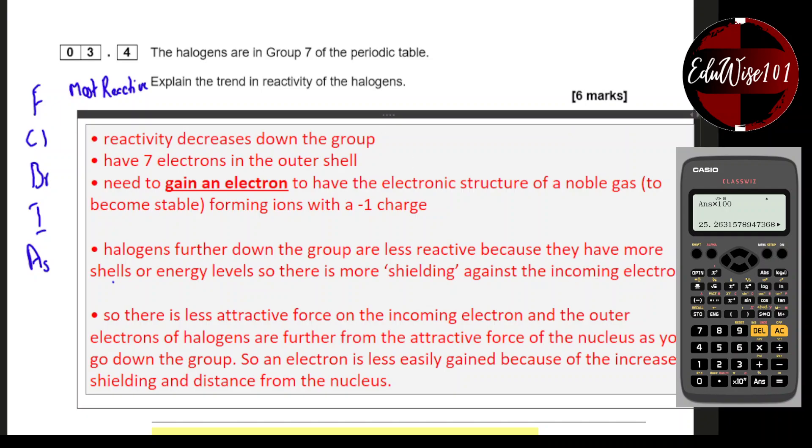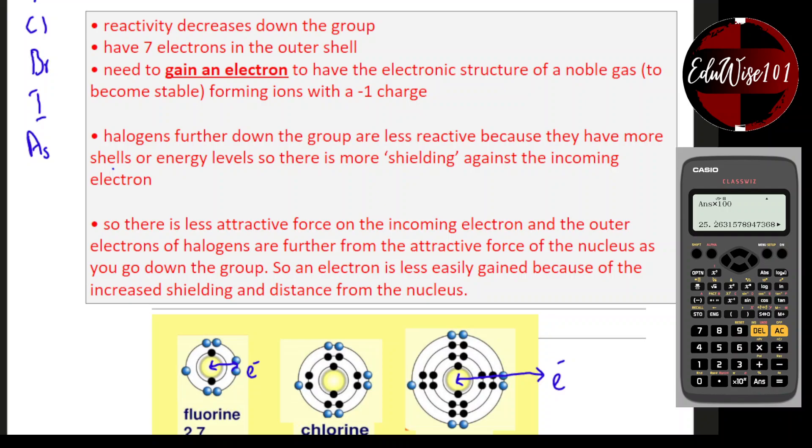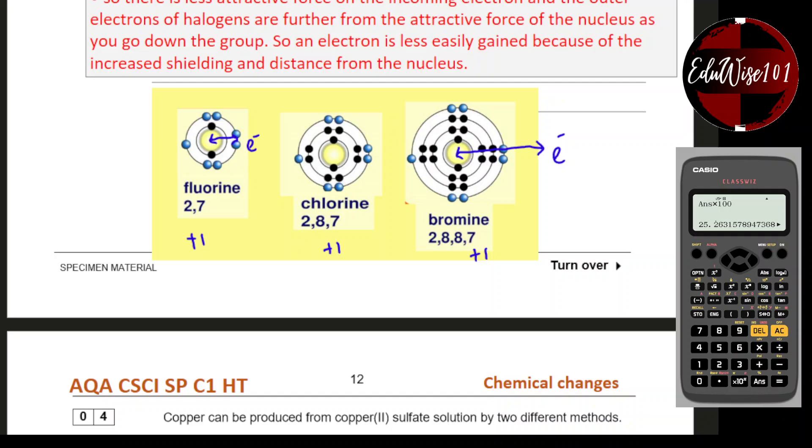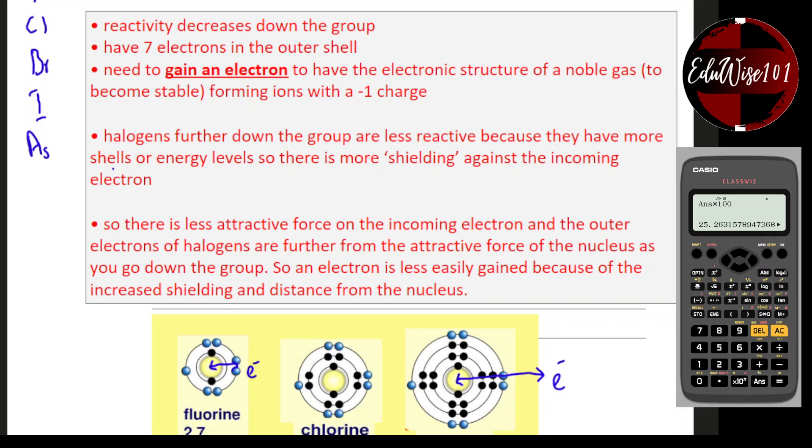Hopefully, that makes sense. The main reason is the electron shielding and the distance between the nucleus and the outermost electron. That is the end of question number three. I will see you in question number four.